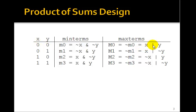0, 0 becomes x or y. This becomes x or not y. Not x or y. And 1, 1 would be not x or not y. So maxterms are easy to remember.